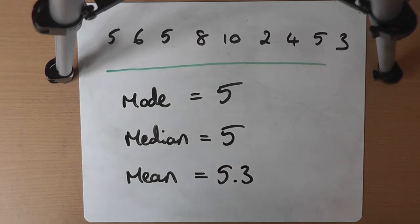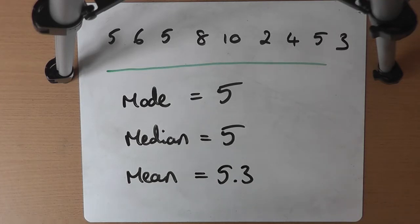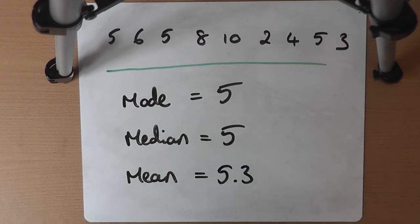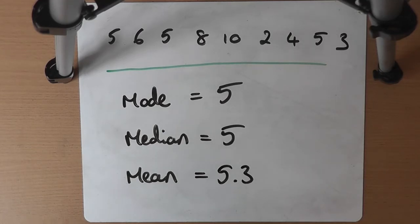A couple of things to notice about those three averages: for this dataset, the mode was 5, the median was also 5, and the mean was 5.3 — all fairly consistent. The three averages return very similar characteristic values. That won't always be the case — sometimes one might be wildly different. They each have advantages and disadvantages, but here any of them would be a good way to describe the data, which has a fairly even spread from 2 through 10.